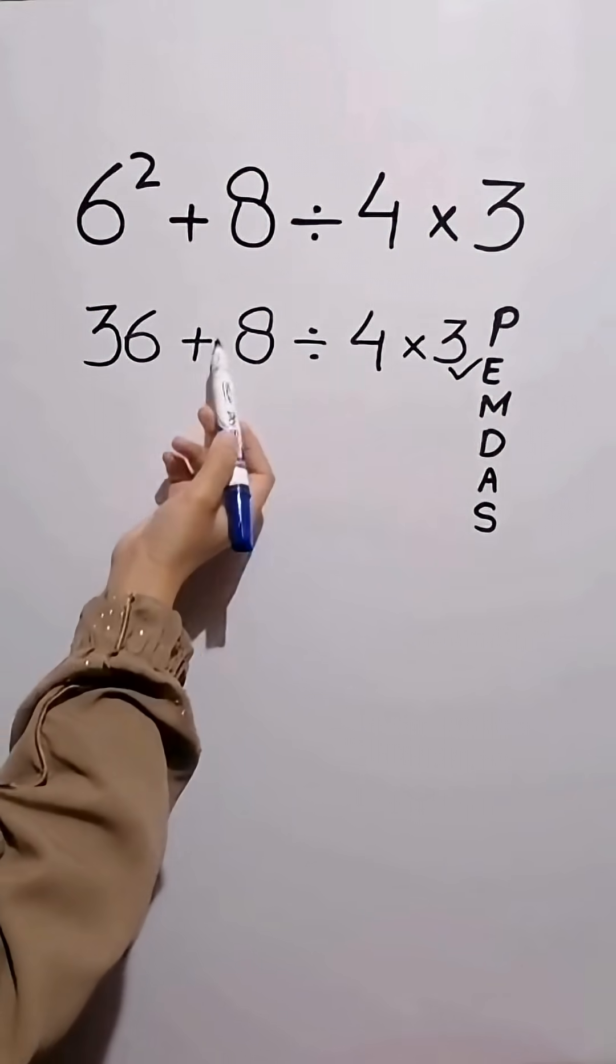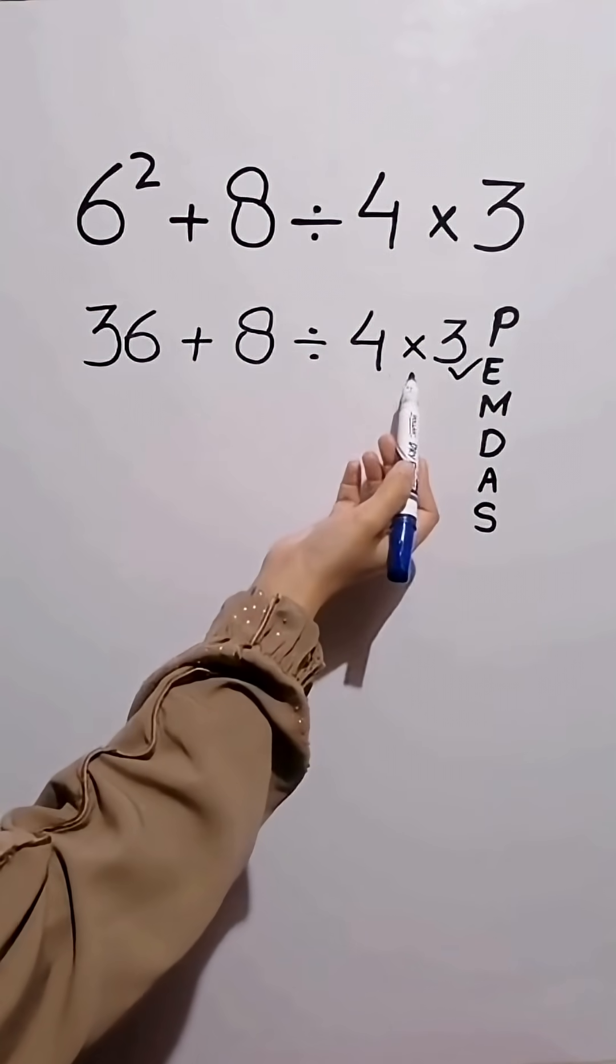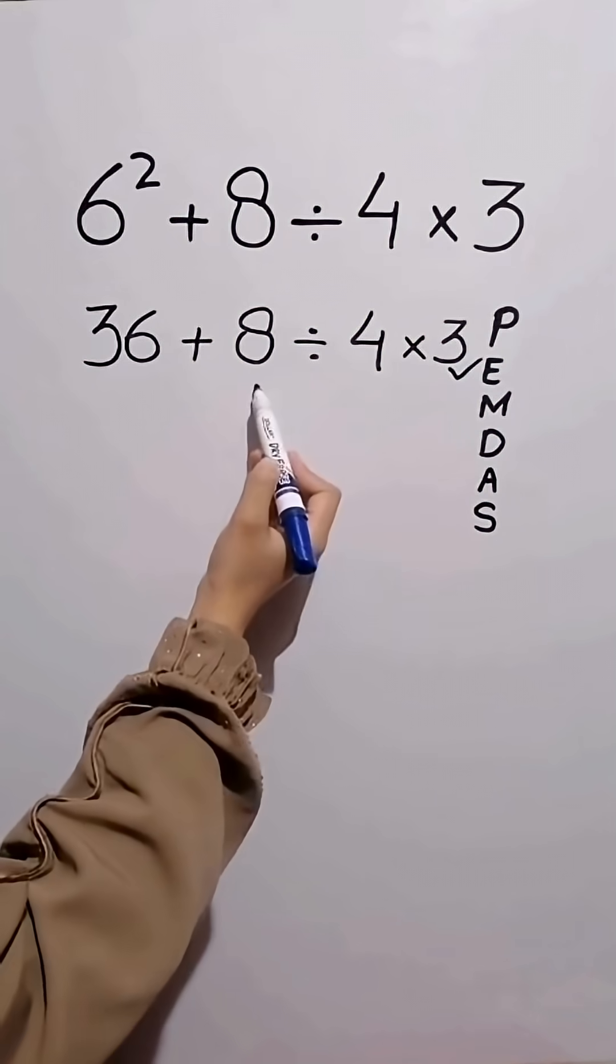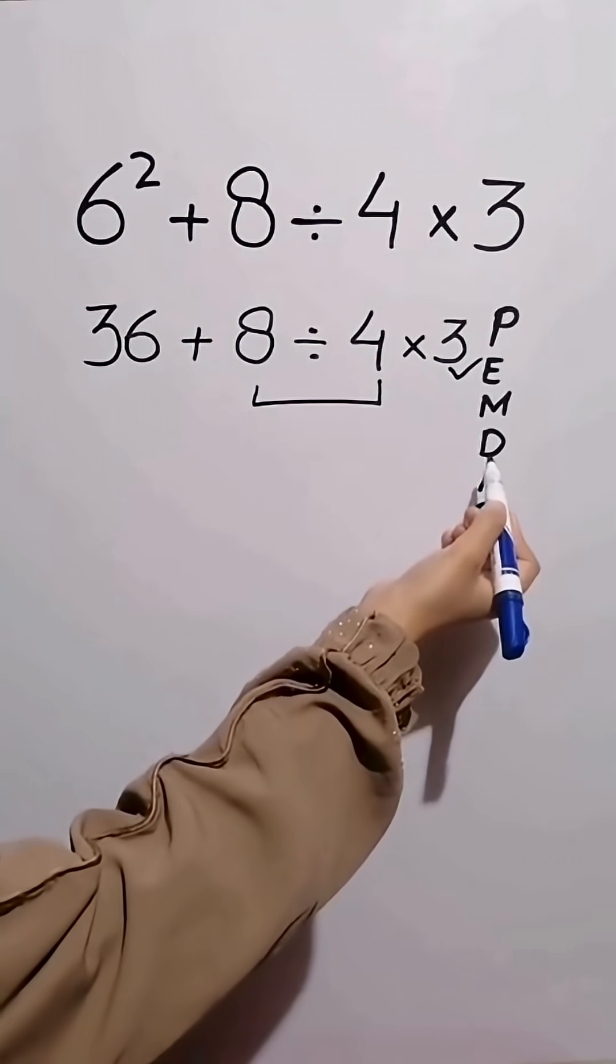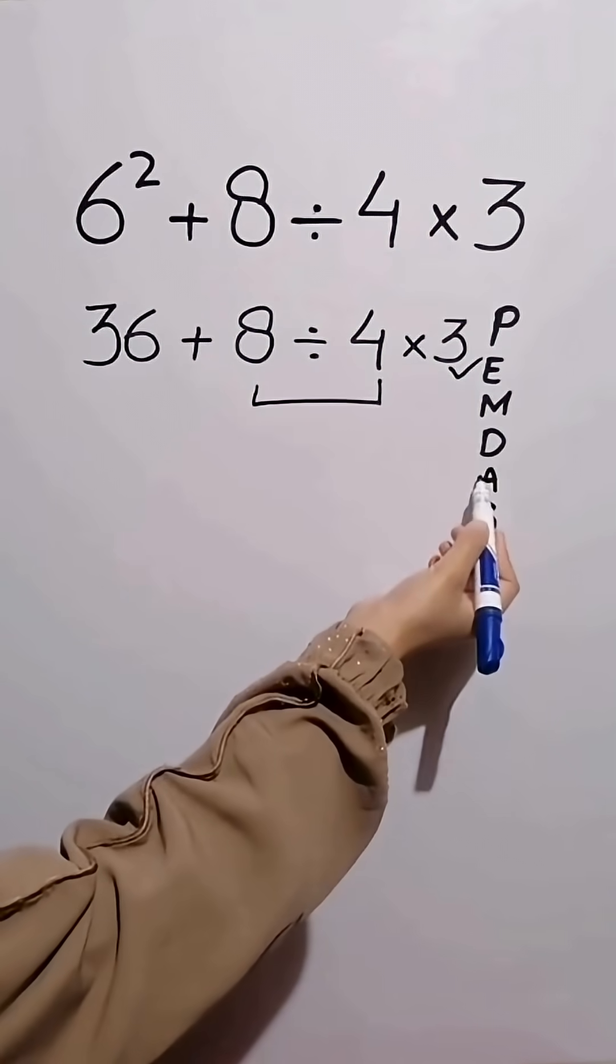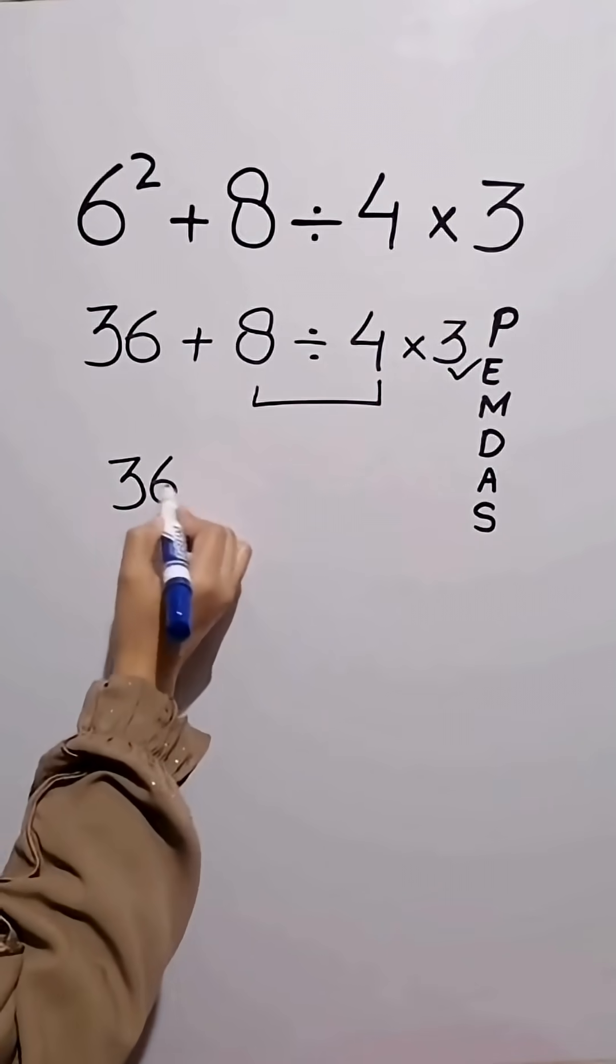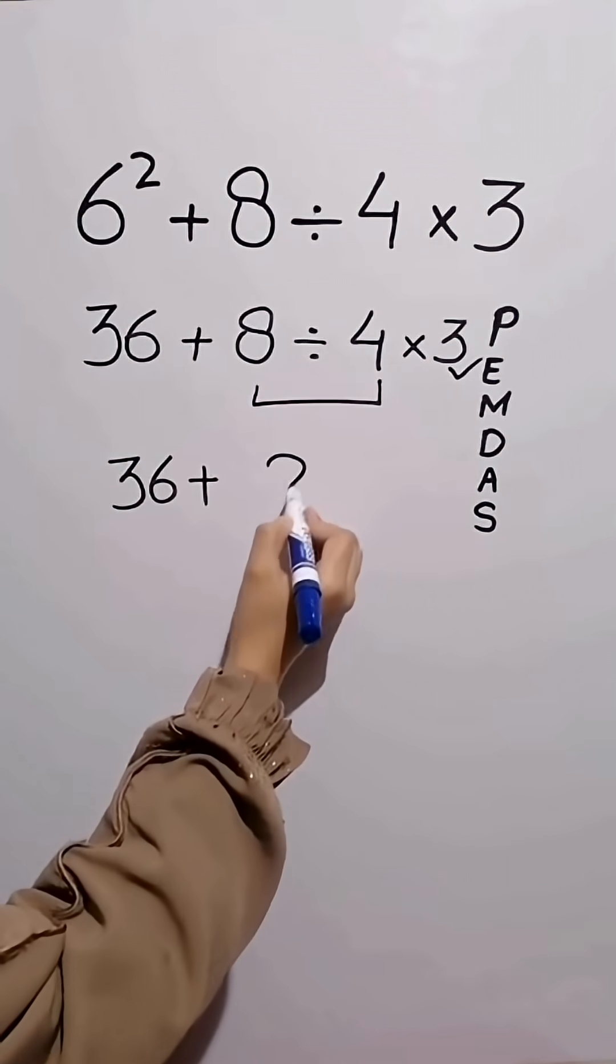In this step, we have addition, division, and multiplication. Now, first we do this division because according to PEMDAS, division comes before addition and multiplication. So now we have 36 plus 8 divided by 4 equals to 2 then times 3.